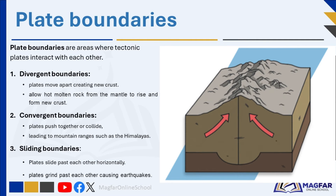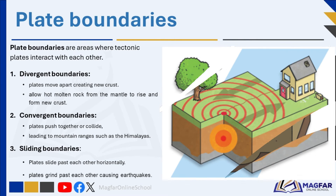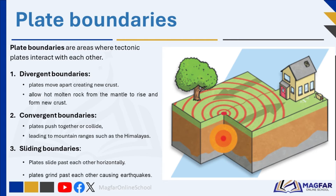In convergent boundaries, plates push together or collide, leading to mountain ranges such as the Himalayas. In sliding boundaries, plates slide past each other horizontally, for example the San Andreas Fault. When tectonic plates slide past each other, they grind past each other, causing earthquakes.